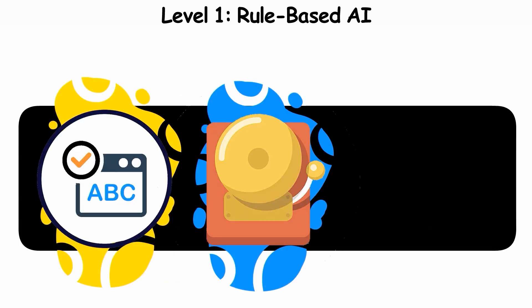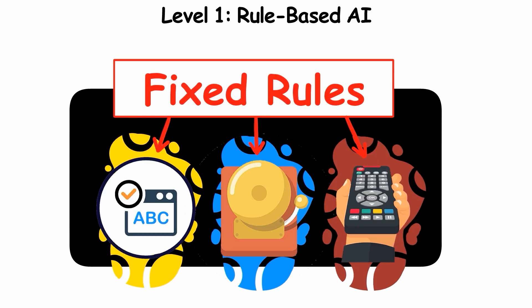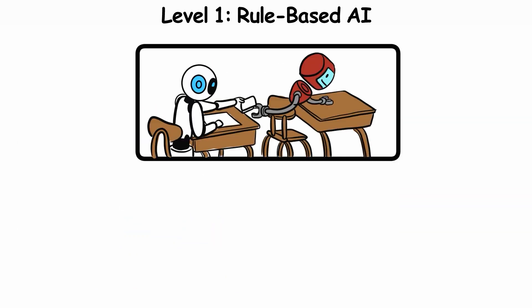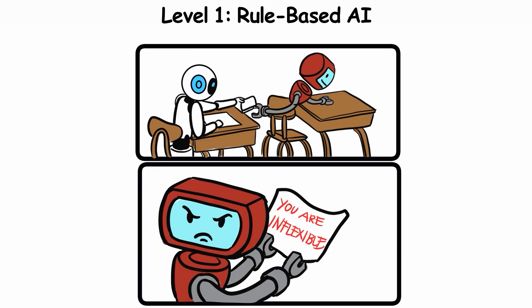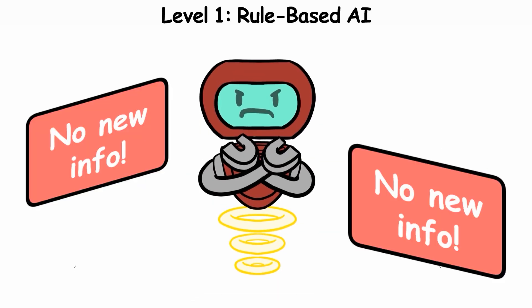Other examples surround us daily. Auto-correct, school bells, even your TV remote, all rely on fixed rules without genuine intelligence. So Rule-Based AI can make decisions, but is inflexible in new situations, and only as smart as its programmed rules.